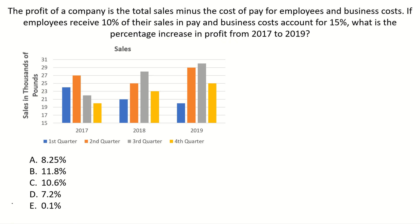The profit of a company is the total sales minus the cost of pay for employees and business costs. If employees receive 10% of their sales in pay and business costs account for 15%, what is the percentage increase in profit from 2017 to 2019?